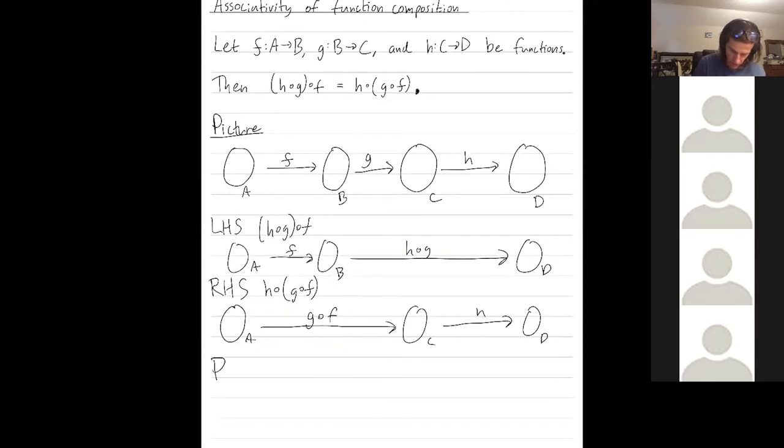So proof that h composed with g composed with f is equal to h composed with g composed with f, but in different orders, as I've outlined here versus here. How do you prove that two functions are equal? You show that on any input, they get the same output.